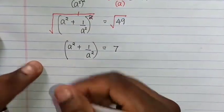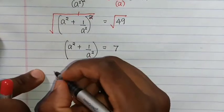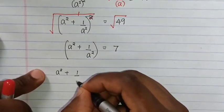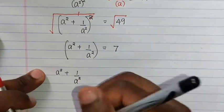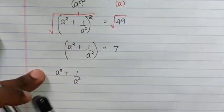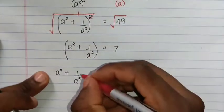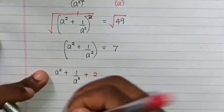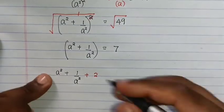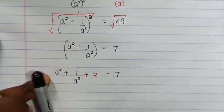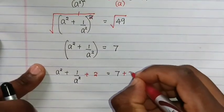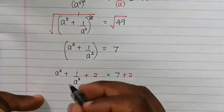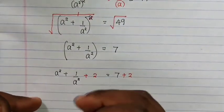This equals a squared equals a squared plus one over a squared. Then we do like before — we add 2, and here it is the same as 7, then we add 2, so here it becomes 9.